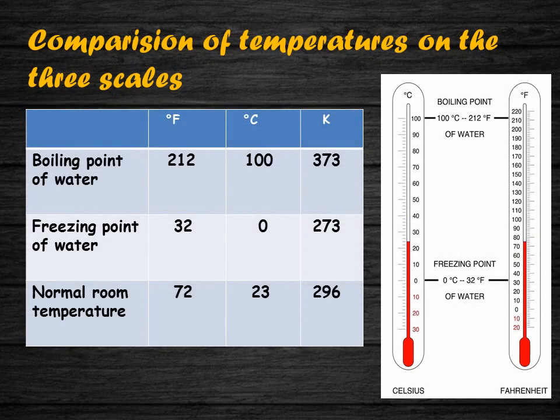Let us compare different temperatures on these three scales. The boiling point of water is 212 degree Fahrenheit on the Fahrenheit scale, 100 degree Celsius on the Celsius scale, and 373 Kelvin on the Kelvin scale. The freezing point of water is 32 degree Fahrenheit, 0 degree Celsius, and 273 Kelvin. Normal room temperature is 72 degree Fahrenheit, 23 degree Celsius, or 296 Kelvin.